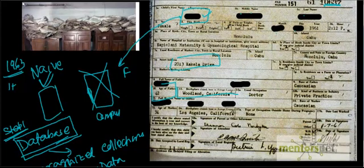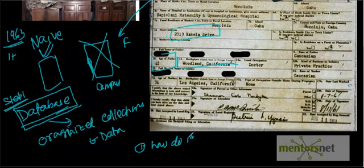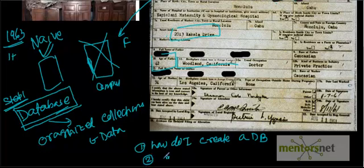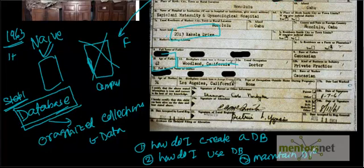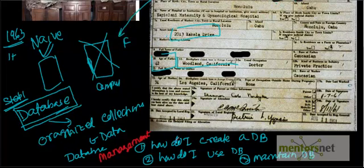Once we have the concept of a database, there are a couple of key questions: How do I create a database? How do I use the database once it's created? And how do I maintain the database? All these things will be answered by a software program called DBMS — Database Management System. DBMS is a software that manages your databases. So two things: an organized collection of data is called a database, and the software that manages it is called a Database Management System, or DBMS.